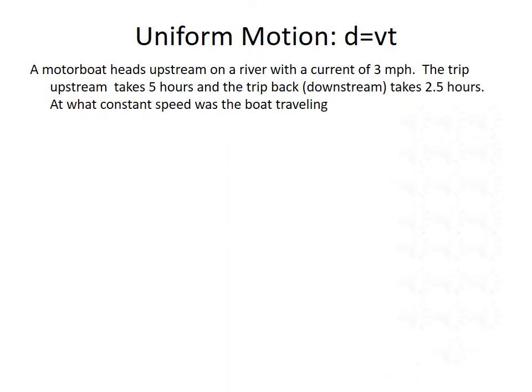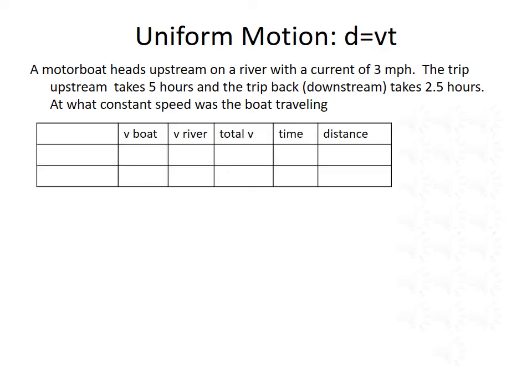The next type of problem we'll talk about is uniform motion. These deal with the equation distance equals velocity times time. Our example: a motorboat heads upstream on a river with a current of three miles per hour. The trip upstream takes five hours, and the trip back downstream takes two and a half hours. At what constant speed was the boat traveling? We'll organize the information in a table, covering the velocity of the boat, the velocity of the river, the total velocity, the time traveled, and the distance traveled.